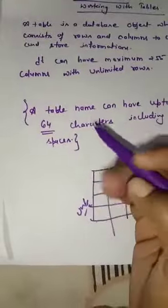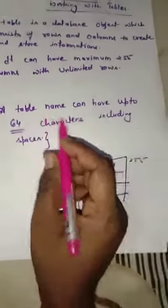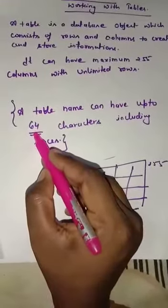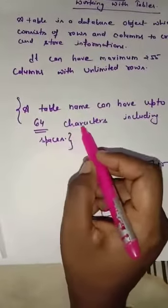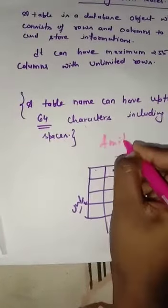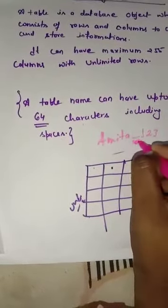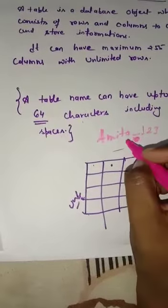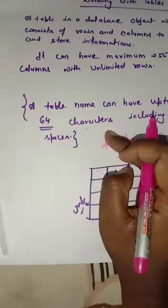A table name can have up to 64 characters, including spaces. If we want to give a name to our table, the table name should be within 64 characters. For example, when we write a name and use a space, that space also counts as a character. So our table name should be within 64 characters.